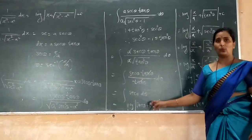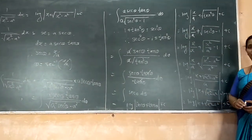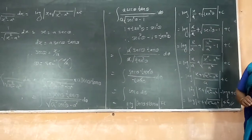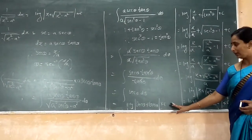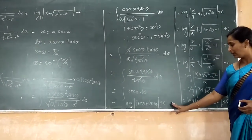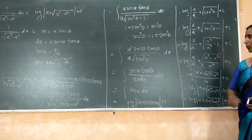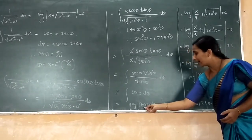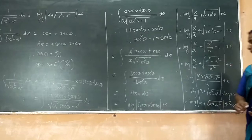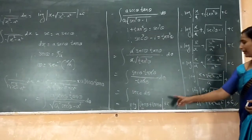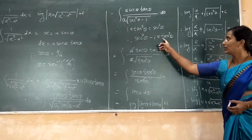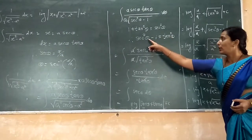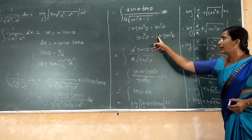We know that the integration of sec θ is log of sec θ plus tan θ, plus c. This is the last step. We know the value of sec θ, that is x over a. And by using the property of this term, we find the value of tan squared θ as sec squared θ minus 1.